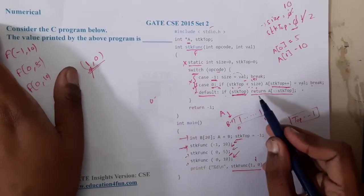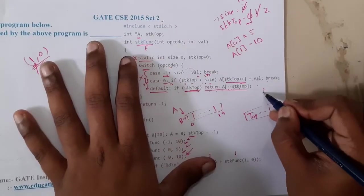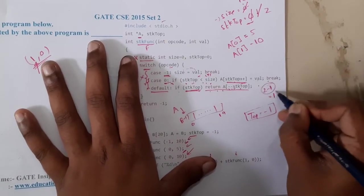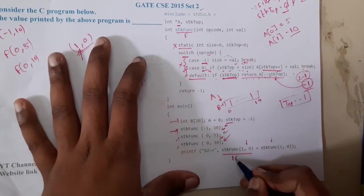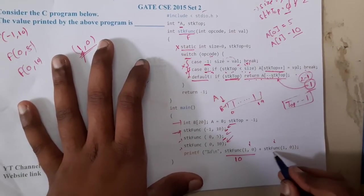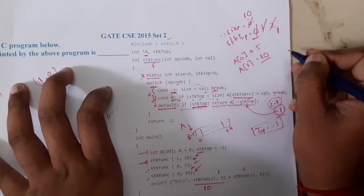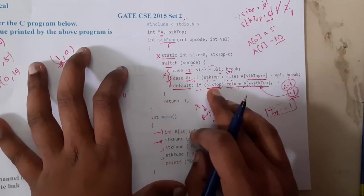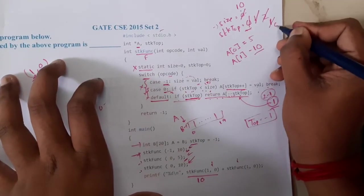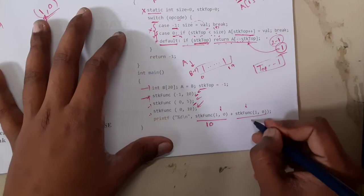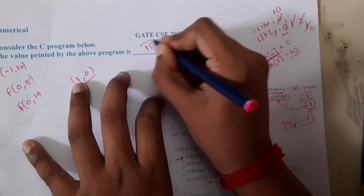The default case returns a[--stk_top]. stk_top decrements from 2 to 1, and a[1] is 10 — so the first call returns 10. Then the second f(1, 0) call executes: stk_top decrements from 1 to 0, and a[0] is 5 — so it returns 5. The total printed is 10 + 5 = 15. The answer is 15.